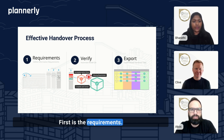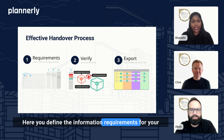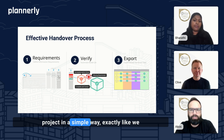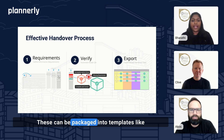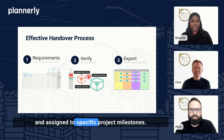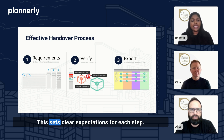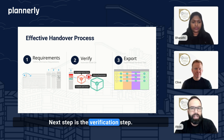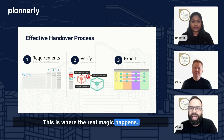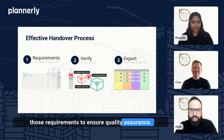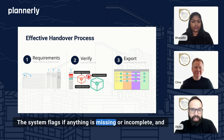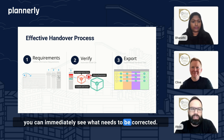First is the requirements step. Here you define the information requirements for your project in a simple way, exactly like we have already covered in this series. These can be packaged into templates like the ones we use for COBE data and assigned to specific project milestones. This sets clear expectations for each step. Next is the verification step — this is where the real magic happens. The model is checked automatically against those requirements to ensure quality assurance. The system flags if anything is missing or incomplete and you can immediately see what needs to be corrected.